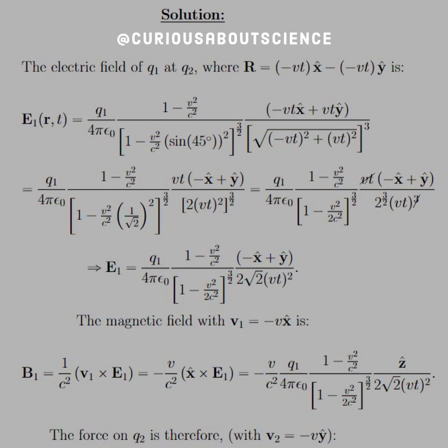We factor out Vt, simplify the radicals and square roots, and cancel what we can. E1 turns out to be Q1 over 4πε₀, times (1 minus V²/c²) over [1 minus V²/(2c²)]^(3/2), times (−x̂ + ŷ)√2 over 2(Vt)².